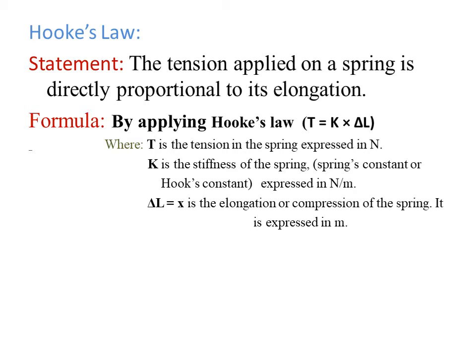Where ΔL is the elongation or compression of the spring expressed in meters, T is the tension expressed in newtons, and K is called the stiffness of the spring or spring's constant expressed in newtons per meter.